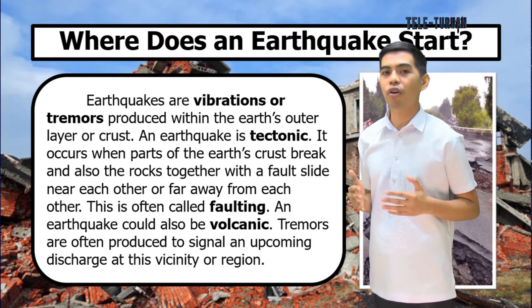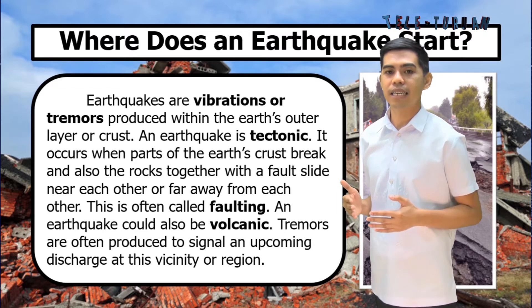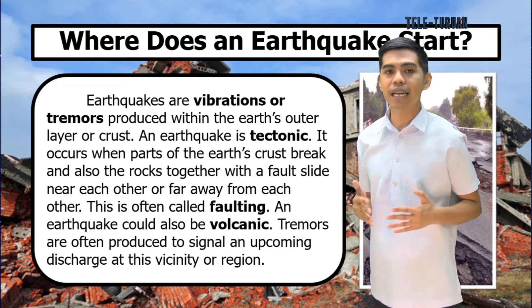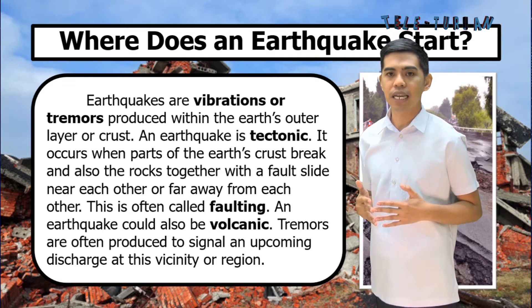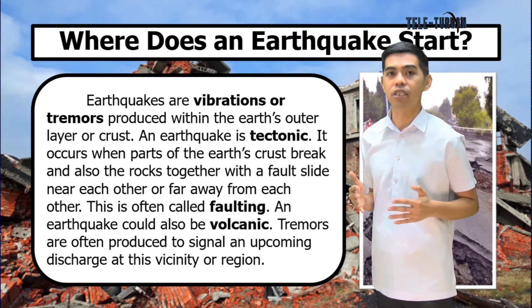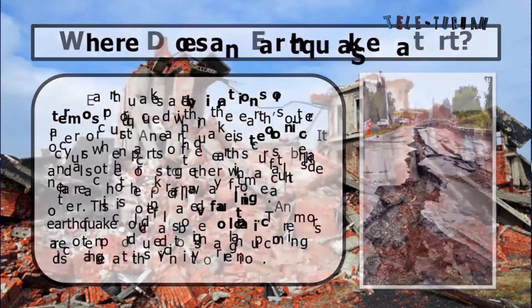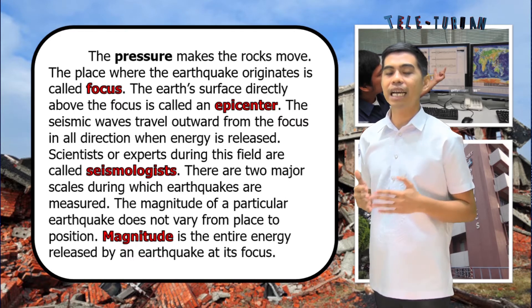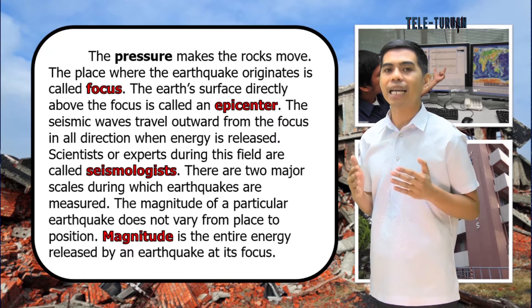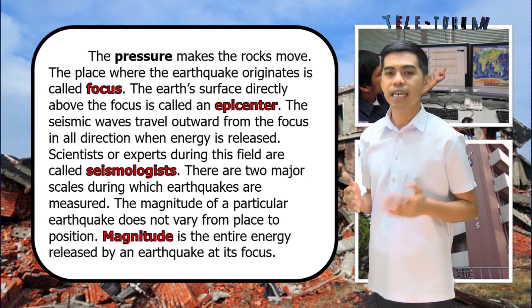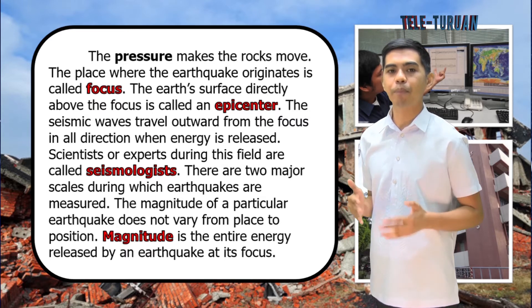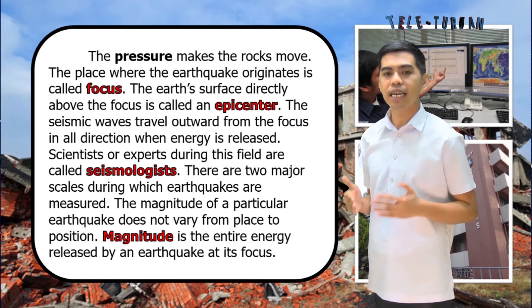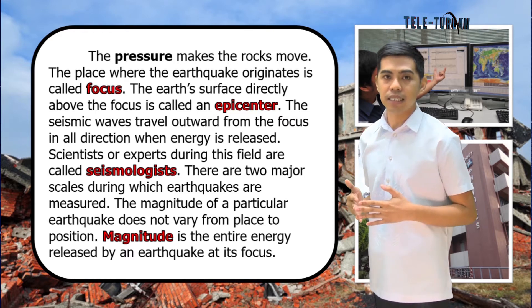An earthquake could also be volcanic. Tremors are often produced to signal an upcoming discharge in the vicinity or region. The pressure makes the rocks move. The place where the earthquake originates is called the focus. The Earth's surface directly above the focus is called the epicenter. Seismic waves travel outward from the focus in all directions when energy is released.